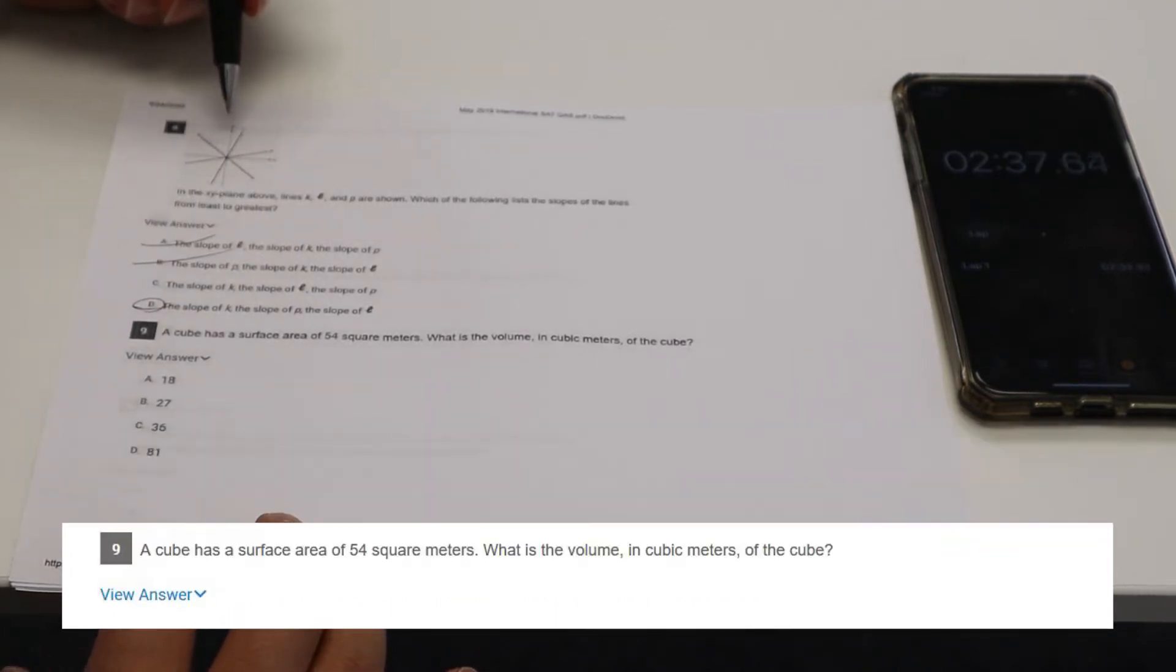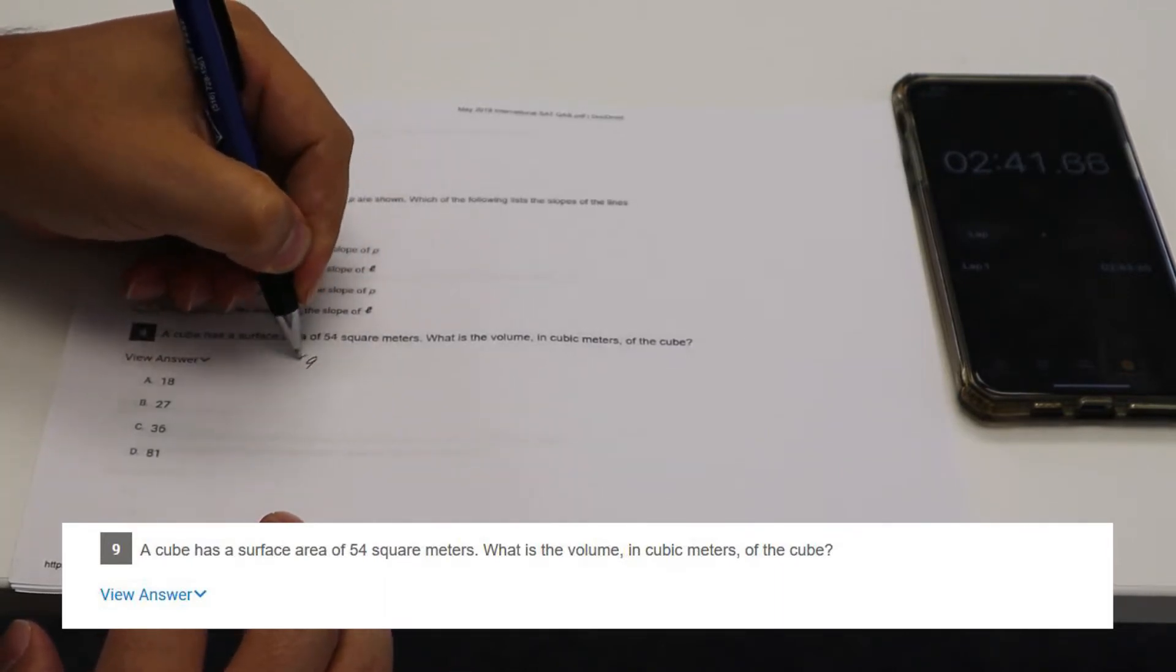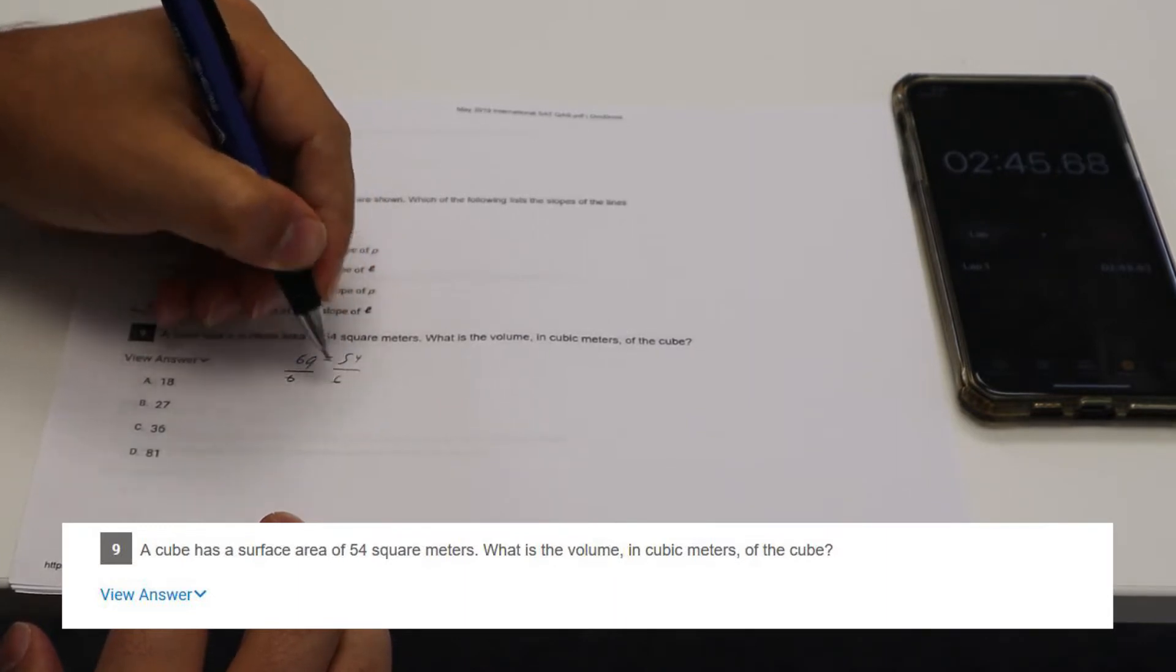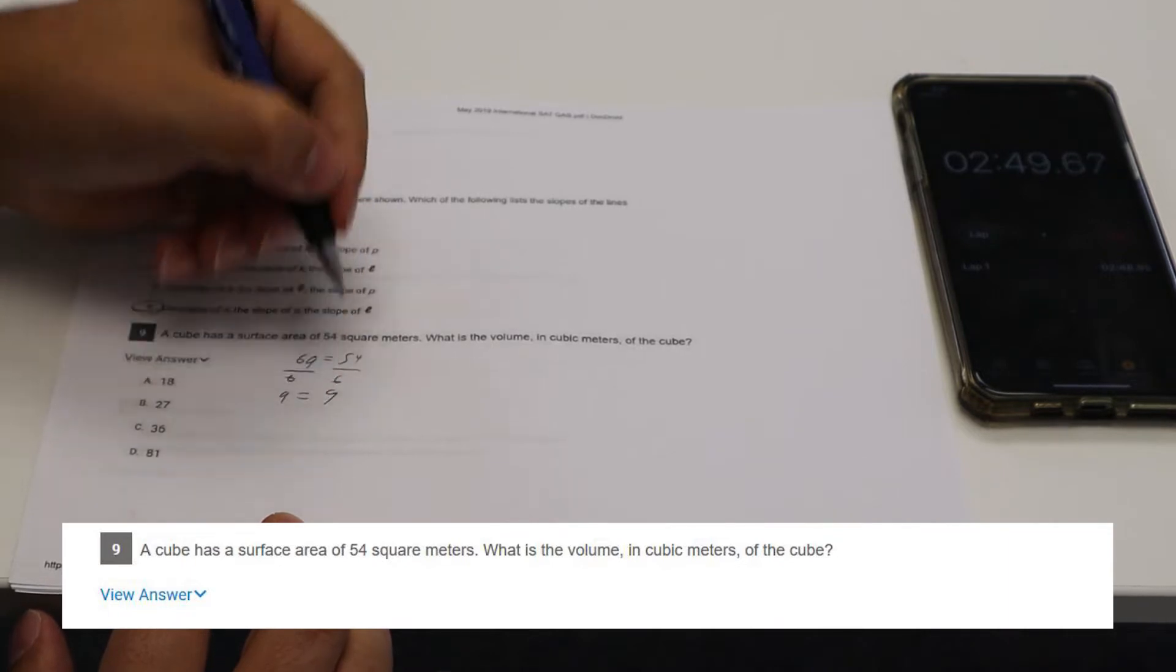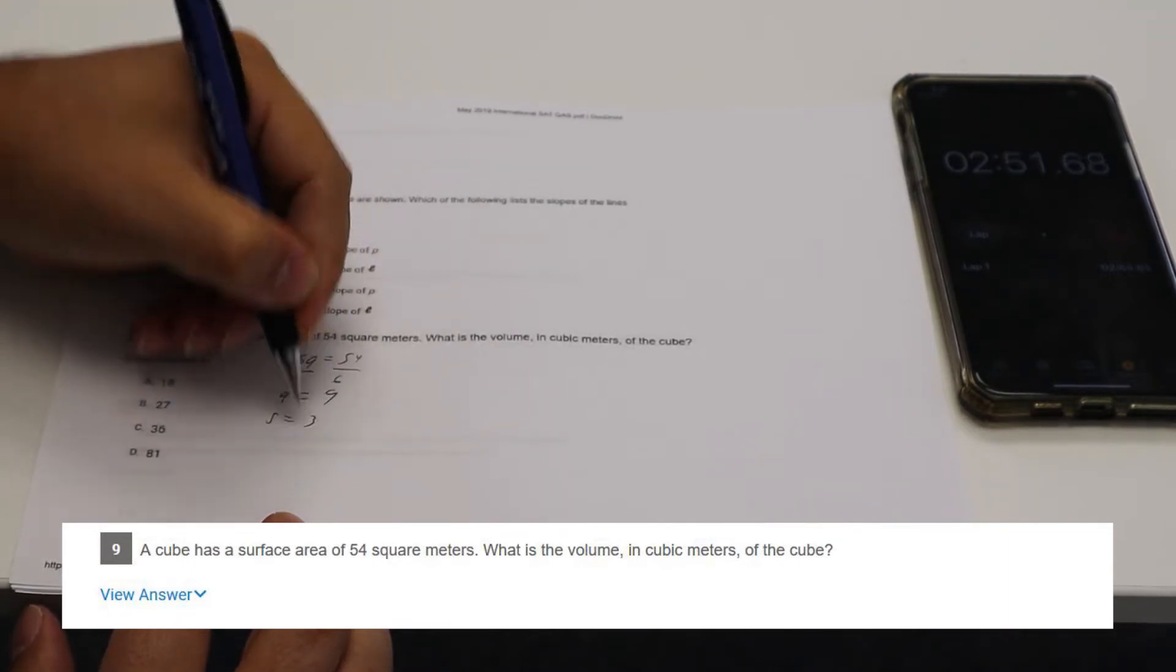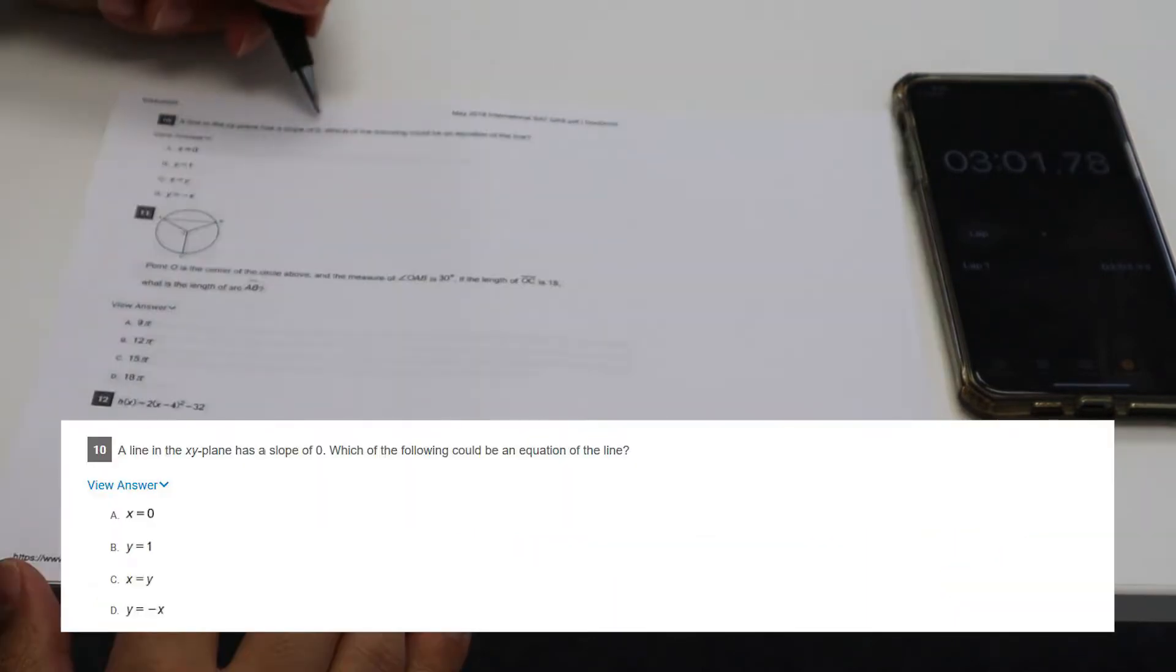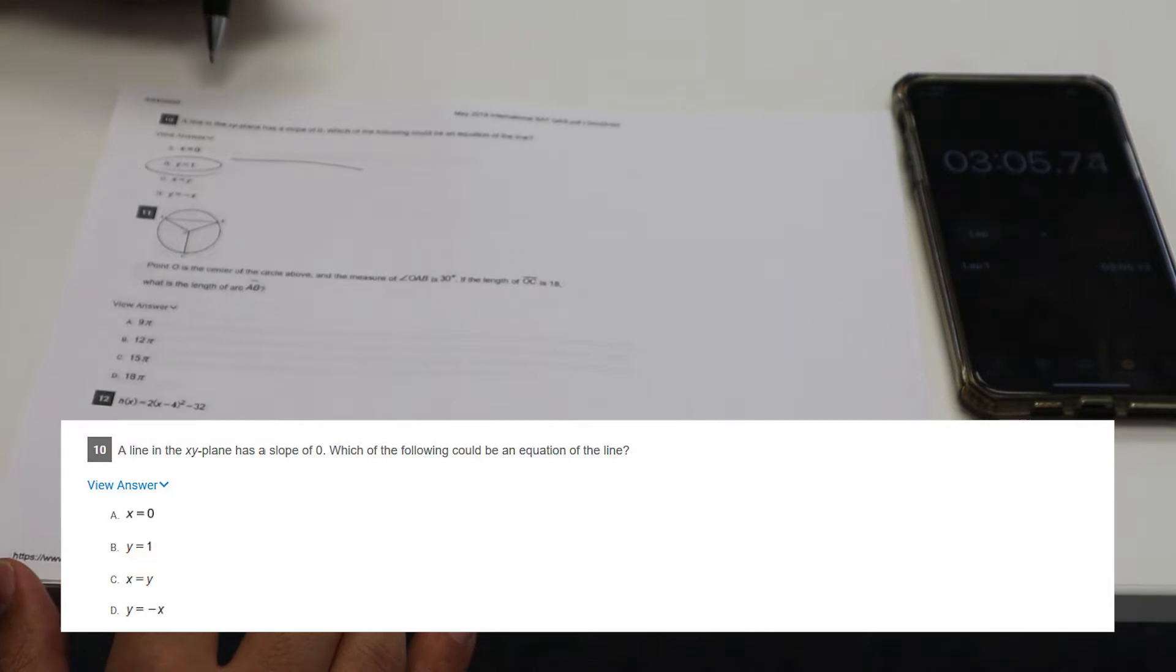Cube has a surface area 54, what's the volume. So surface area is six times the area of one side is nine. So side equals three, volume equals 27. Slope of zero. So slope of zero, Y equals, it's going to be like that.